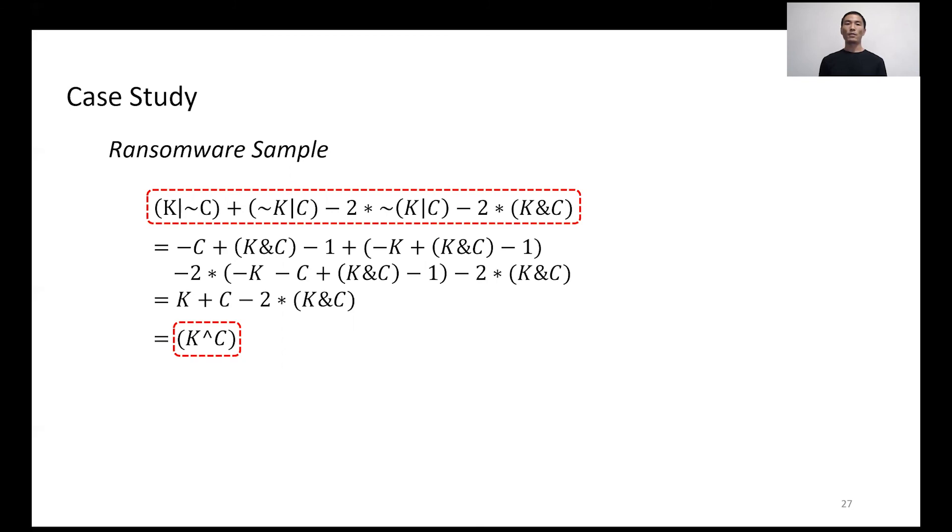The simplification expression is shown in the bottom dashed border: K XOR C. It means that the malware developer hides the encryption key by calculating the XOR operation with a magic number C.